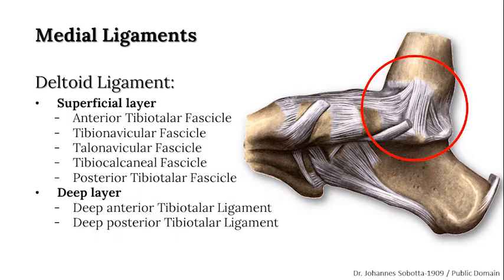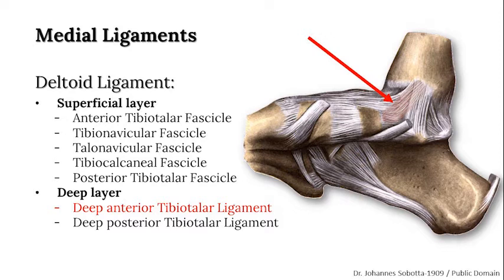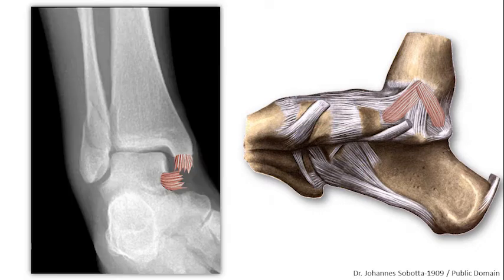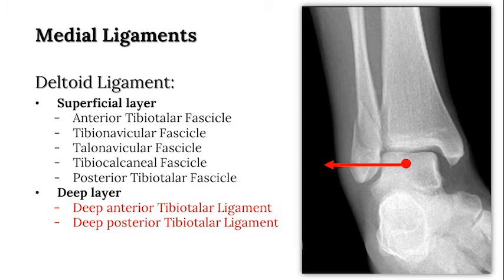Medially, the deltoid ligament is made up of two main components: the superficial layer as well as the deep layer. The deep component is made up of the anterior and the posterior tibiotalar ligaments. While both the superficial and the deep components can be injured, it is thought that with rotational ankle fractures, injury to the deep component of the deltoid ligament leads to lateral talar shift and malalignment of the mortise.